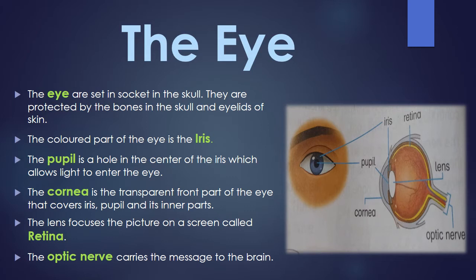The cornea is the transparent front part of the eye that covers the iris, pupil, and inner parts. This U-shaped transparent portion which covers the pupil and all the inner parts of the eye is known as the cornea. It does not have any color, it covers the whole eye, and it is the front part of the eye.